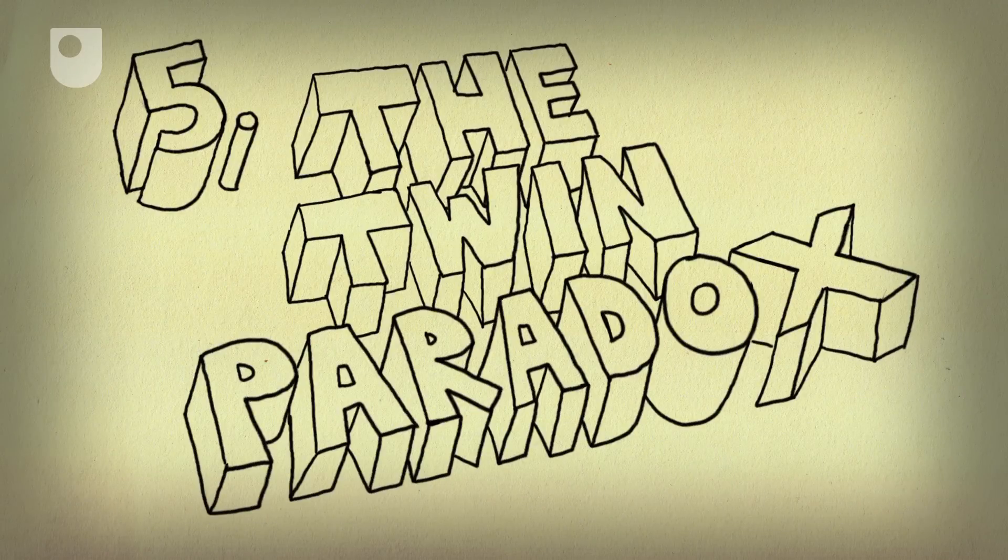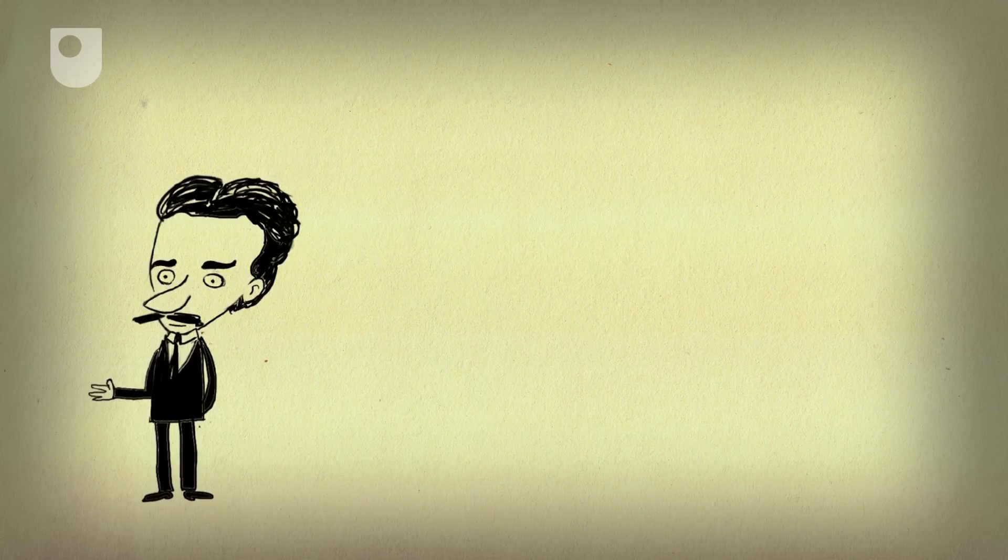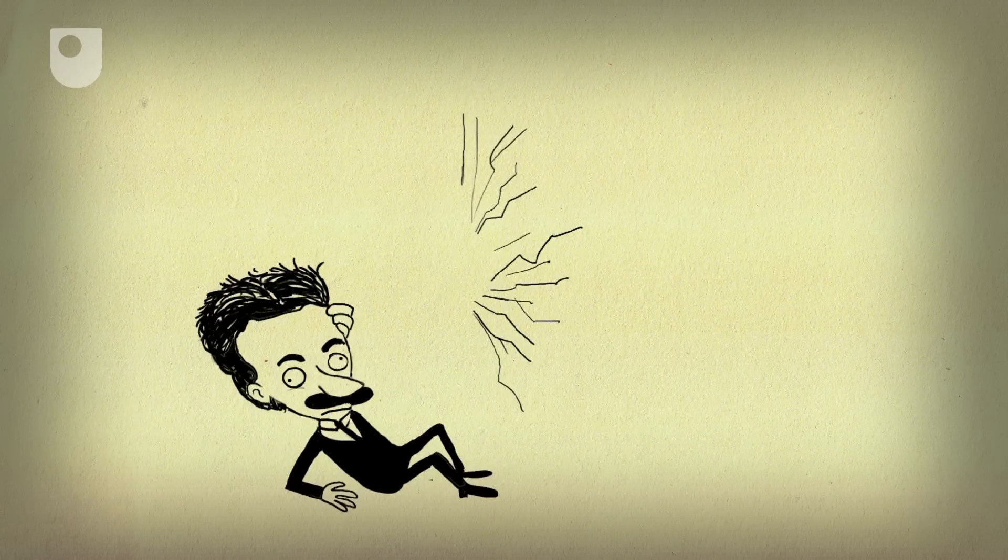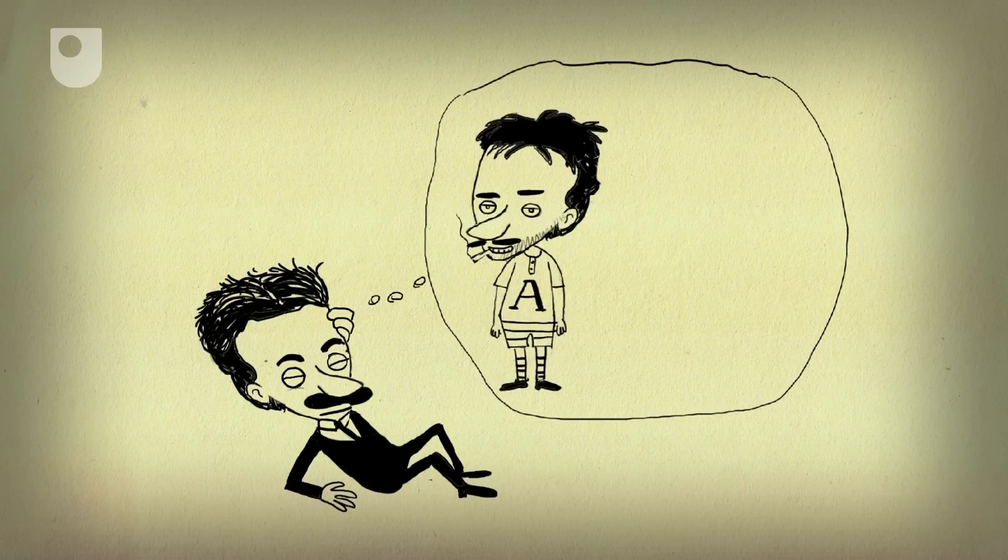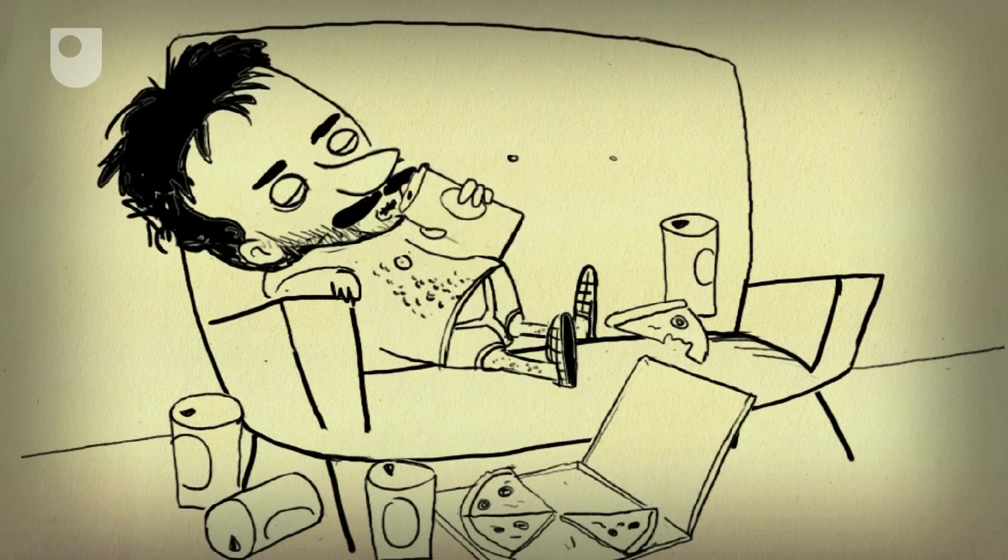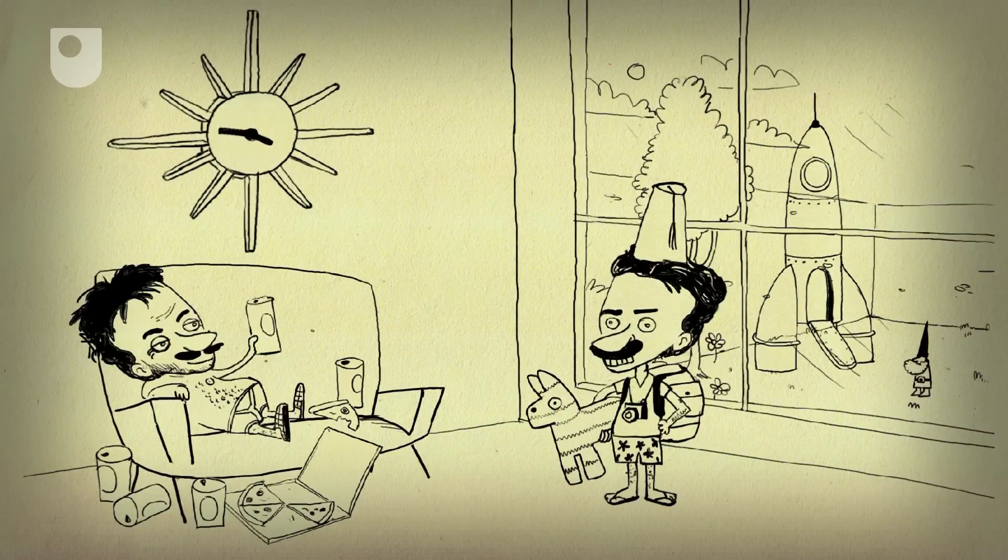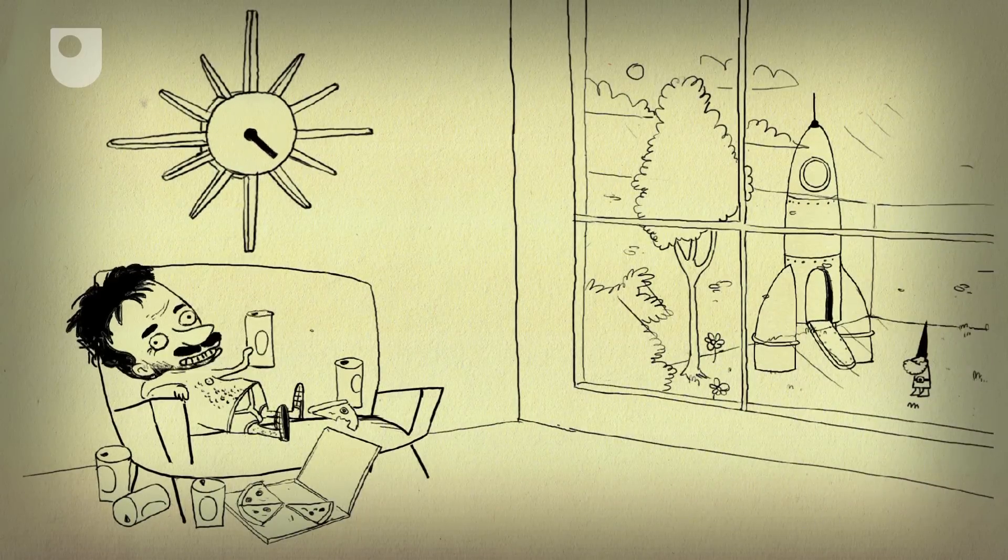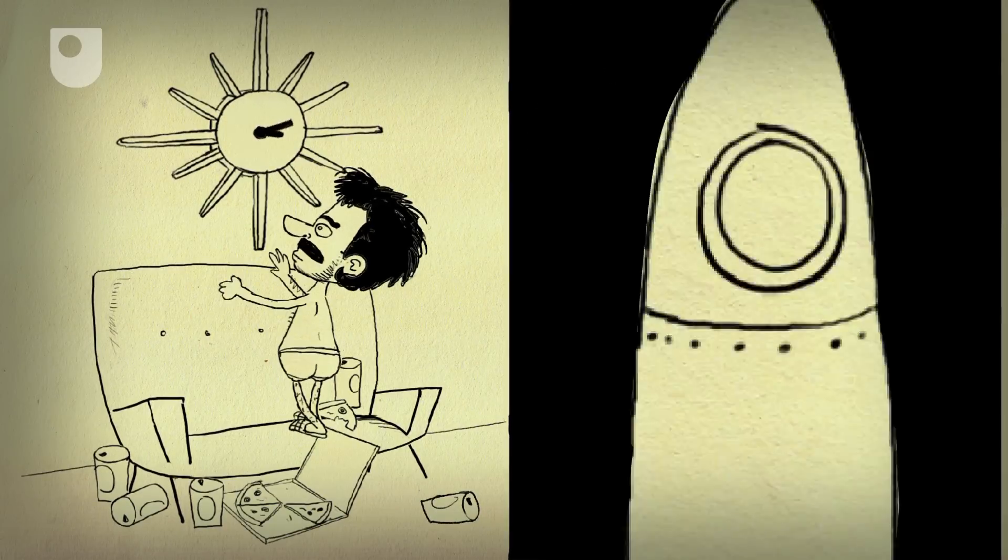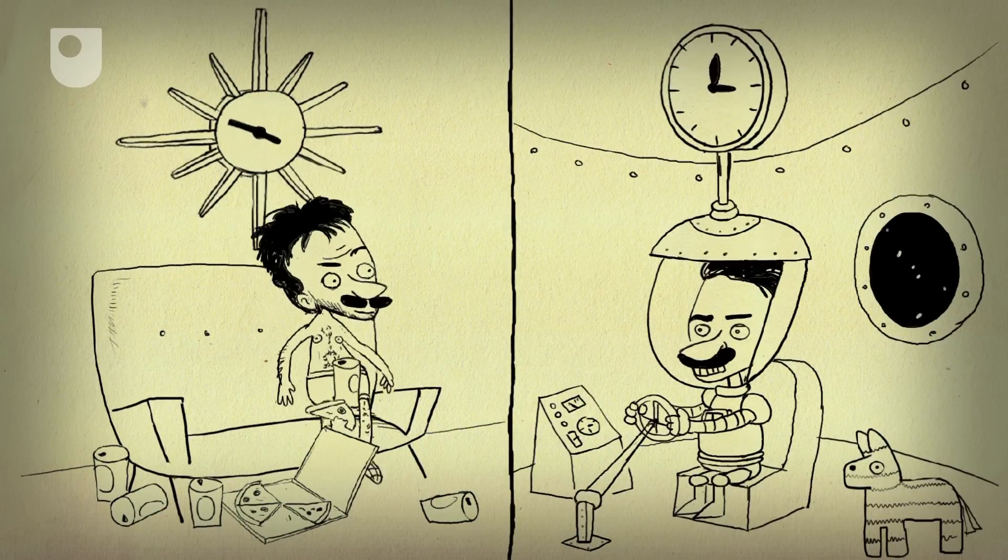Number 5. The Twin Paradox. Albert Einstein didn't have a twin brother, but he had some funny ideas of what you could do with one. He imagined two identical twins, let's call them Al and Bert. Now Al is a couch potato, but Bert likes to travel. So he hops into a spaceship and zooms off at close to the speed of light. That's when Einstein's special theory of relativity kicks in. It says that the faster you travel through space, the slower you move through time.